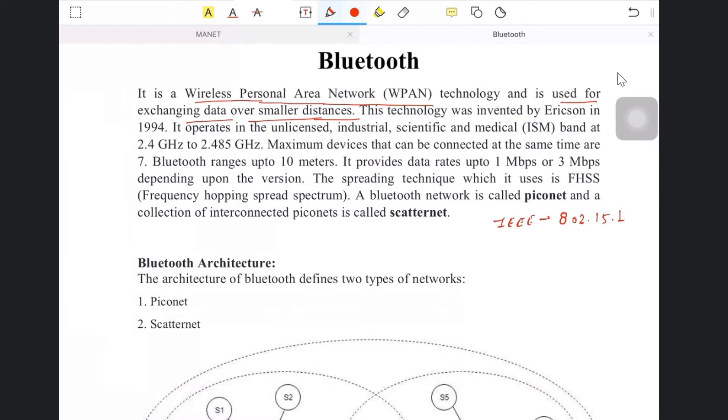If you talk about the frequency at which this is operating, it operates on ISM band, that is 2.4 GHz to 2.485 GHz. This operating frequency for Bluetooth is 2.4 GHz to 2.485 GHz, and it was first invented by Ericsson in 1994.